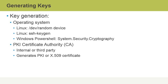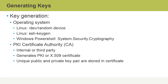Either way, the certificate authority, or CA, generates PKI certificates, which are also called X.509 certificates. A unique public and private key pair is issued to each entity, such as a user or a computer, and the public and private key pair are stored within the certificate. The keys in the certificate are mathematically related to one another.